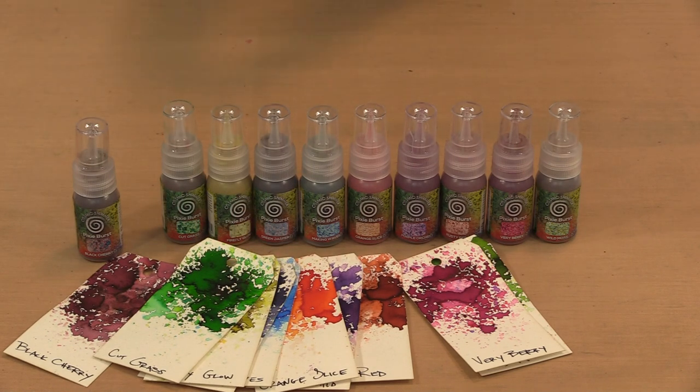So let's talk about what those colors are. In alphabetical order, you have black cherry, cut grass, firefly glow, green jasper, making waves, orange slice, purple orchid, rusty red, very berry, and wild moss.